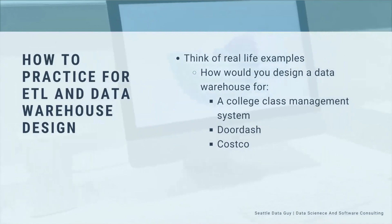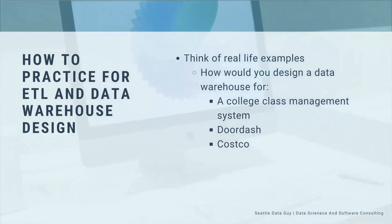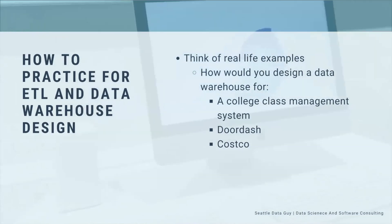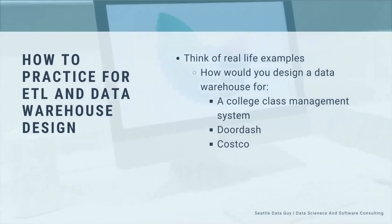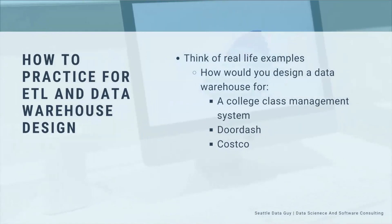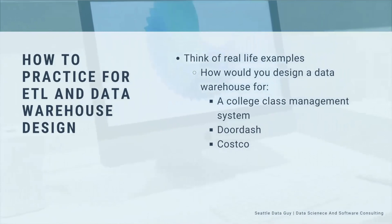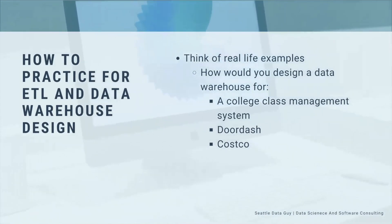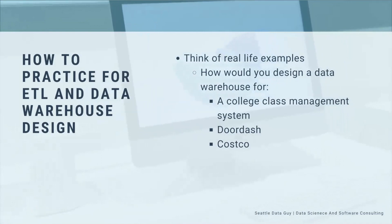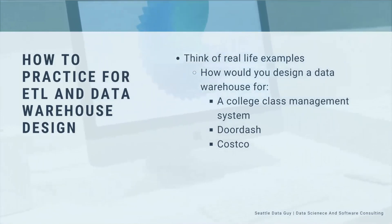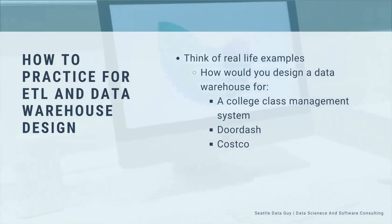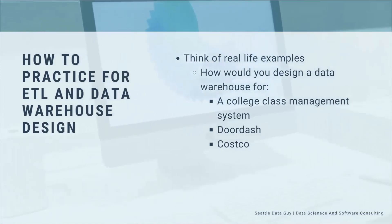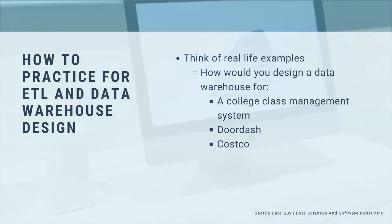Similarly, you can think about something like DoorDash — what's the fact table? You've got orders, drivers, customers, locations, and it can get very complex. Making sure you try to deal with a lot of those complexities, because often there will be things that intersect. For example, DoorDash is probably very similar in some ways to Uber — you just add that extra layer of restaurants, the food, and the menu you're ordering from, plus complex issues like location. Think about things you do every day and create data warehouses around that.